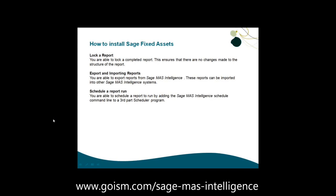In previous products like FRX or F9, someone could change a report and other users might not know what had happened — sometimes requiring a restore of the sysdata folder from backup. Locking the report prevents that issue. You also have the ability to export and import reports. Reports can be exported from SMI and imported into another Sage MAS Intelligence system, allowing you to move reports when migrating from one server to another.